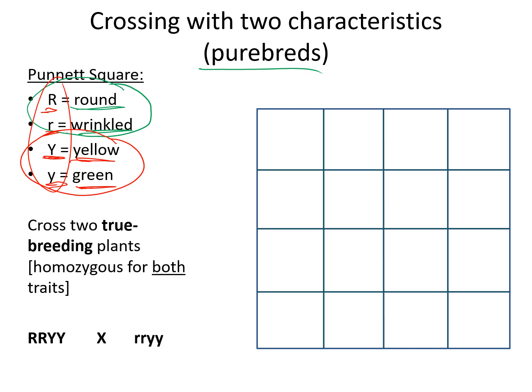If we had two purebred plants, one is homozygous for the dominant trait of round and homozygous for the dominant trait of yellow. It's going to be crossing with another that is homozygous for the recessive trait of wrinkled and homozygous for the recessive trait of green.